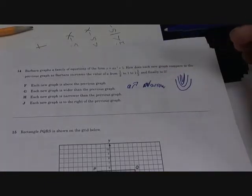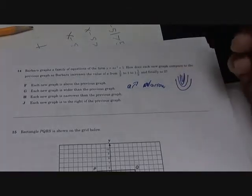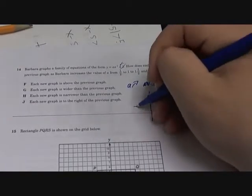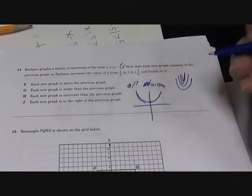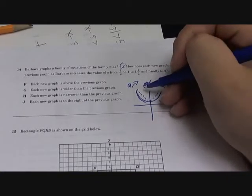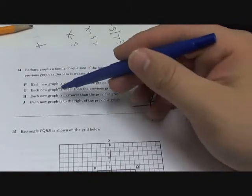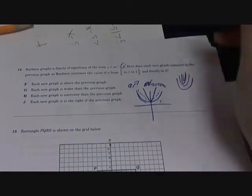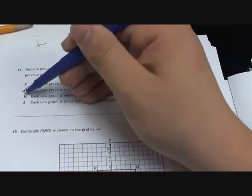Which one of these is true? Each new graph is above the previous graph - no, because it has the same starting point which is one. So if this is the first one, you increase a, it's this, and then it gets like this. The new graph is wider than the previous - not really wider. If a is increasing it gets narrower.